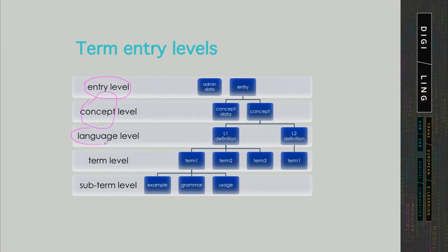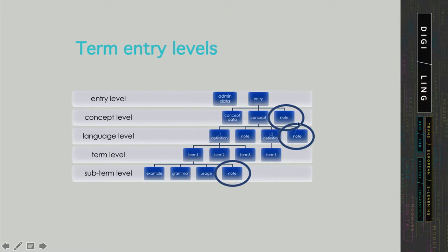At the language level, you will find the information about the language, such as the language code, and also the definition in that particular language. Then on the term level, you will find individual terms for each of the included languages, and the sub-term level will involve all the information pertaining to a single term in that particular language. There are certain data categories, such as the category node, which may appear on all levels — either on the concept level, language level, or the level of individual terms.